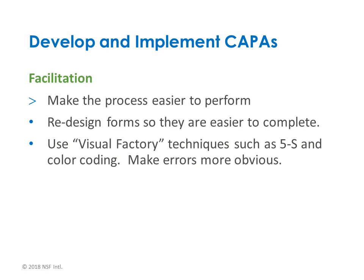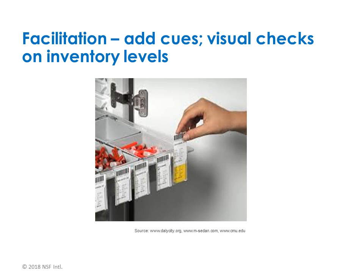The next tier is facilitation: how can we make the process easier to perform? We need to keep the users in mind at all times. For instance, redesigning forms so they're easier to complete — using shading and form structure so the user has an easier time. Techniques such as the visual factory, 5S, and color coding make things more obvious. One example shown here is a visual check on inventory levels, where a yellow tag appears as the bin level drops to indicate it's time to replenish — simple Kanban techniques that make it visually apparent when people need to take action.